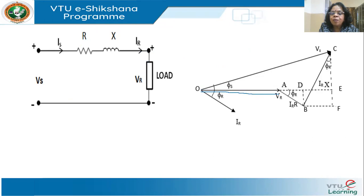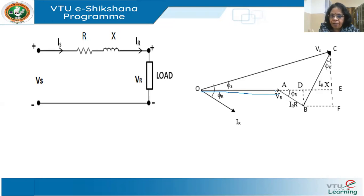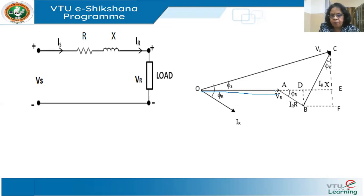You draw OA, where the magnitude of OA is the magnitude of the receiving end voltage phasor. You can take whatever scale you want. Once I draw VR, the next thing I know is the current. The receiving end current is determined by the load. The load may be specified as simply R, L, or X, or the power output with power factor may be given, or the KVA and power factor may be given. From the given data you can find the power factor of the load.